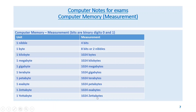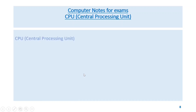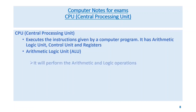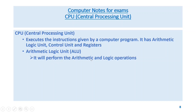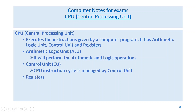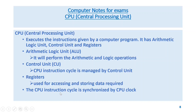CPU — central processing unit — executes the instructions given by a computer program. It has an arithmetic logic unit (ALU), a control unit (CU), and registers. The ALU performs arithmetic and logic operations. The control unit manages the CPU instruction cycle. Registers are used for accessing and storing data required by the CPU.